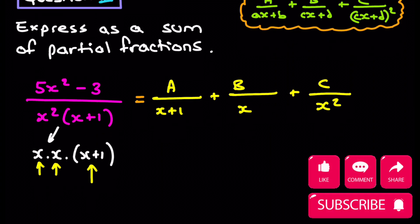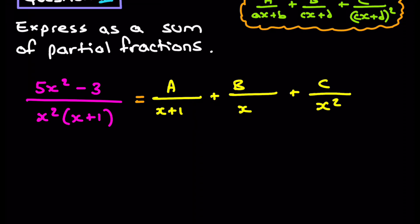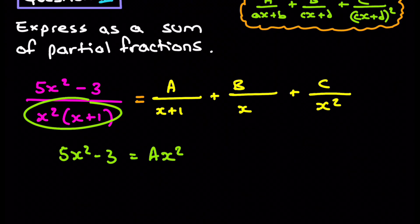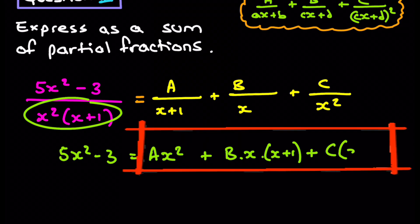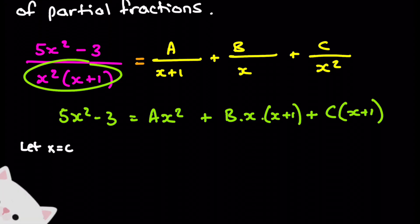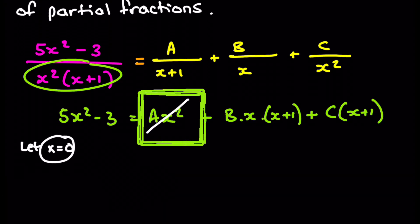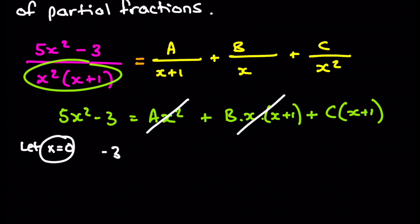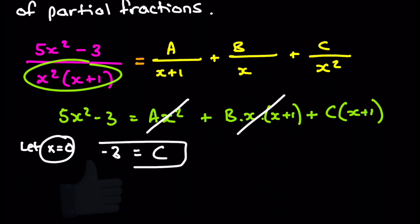Now we multiply everything through by the denominator, just as we did in Type 1 and Type 2. That leaves us with 5x² − 3 = Ax² + Bx(x + 1) + C(x + 1). We choose a substitution: let x = 0, because that makes the A and B terms go to zero. Substituting gives −3 = 0 + 0 + C, so C = −3. A very easy result.